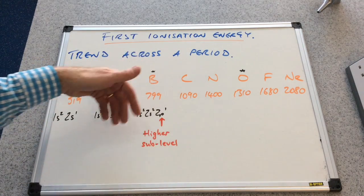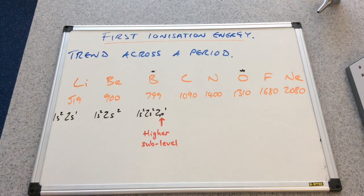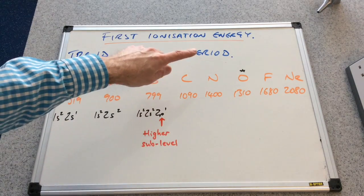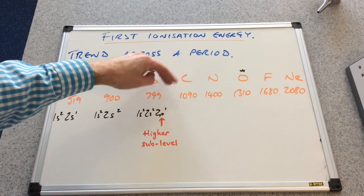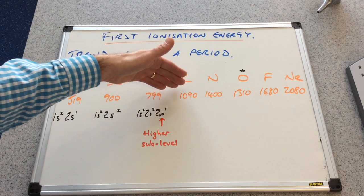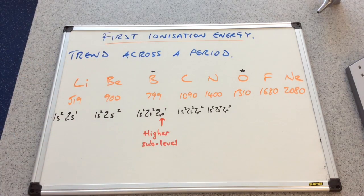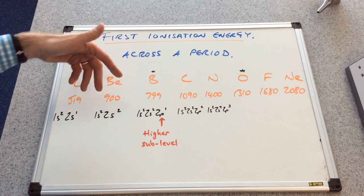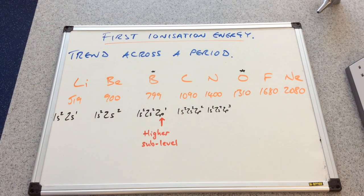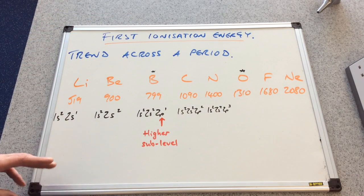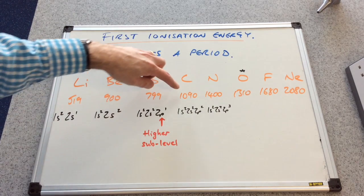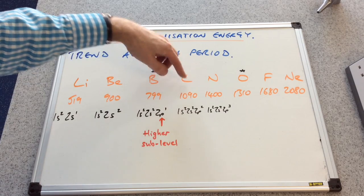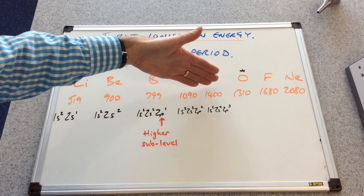And then when you get to carbon, the increased nuclear charge kicks in and the energy goes back up. You've got a smaller atomic radius because of the same shielding. And then with carbon and nitrogen, you've got the increased nuclear charge factor and the same shielding but smaller atomic radius factor kicks in. So the trend picks up again and it starts to go back up.